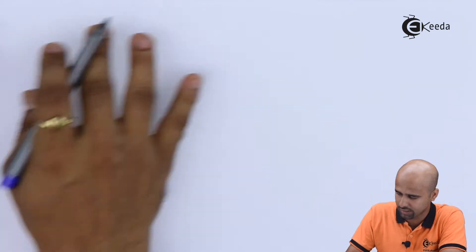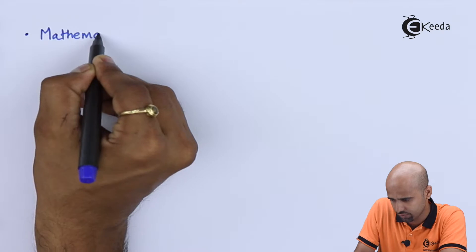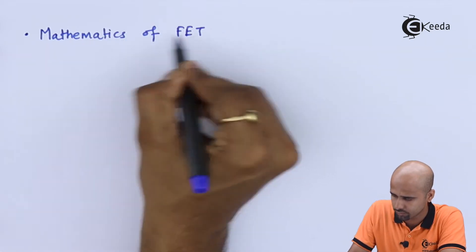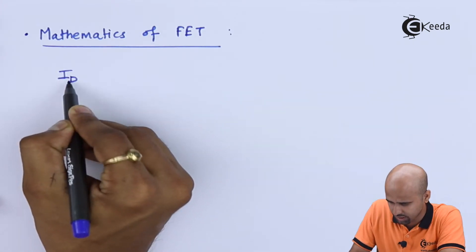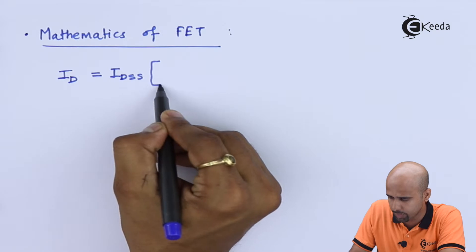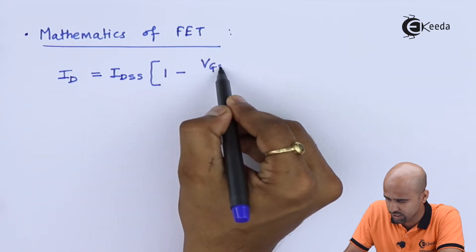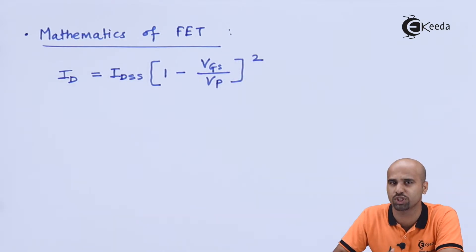Now, you got an idea that how many types of biasing circuits we have and how many kinds of numericals we will be getting in this particular circuit. Now, coming to the part of mathematics of FET, we do have one equation that is called as Shockley's equation. That is nothing but ID is equal to IDSS multiplied by 1 minus VGS divided by VP the whole square.